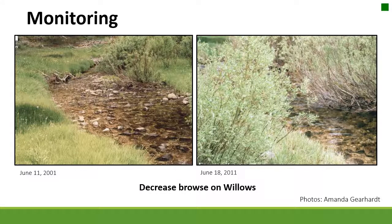Another example of when you might want to monitor is in a riparian area where the goal is to create better habitat for wildlife and fish species. We can implement management actions, but we don't know if they'll be effective unless we monitor over time. Here you can see a 10-year difference between pictures — on the right, willows are coming back, providing more bank stability and altering water temperatures to be more conducive for fish species.